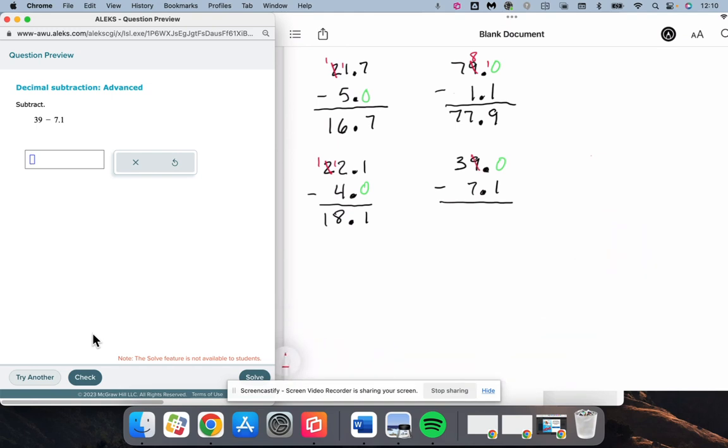So 0 minus 1, can't do it. Need to borrow. That becomes an 8. That becomes a 10. 10 minus 1 is 9. Decimal stays lined up. 8 minus 7 is 1. 3 minus nothing is 3. So 31.9 for this one.